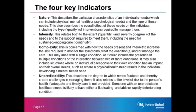The four key indicators will be considered as well as scoring the needs as per the previous slide. In addition, the assessor will be looking at the nature, intensity, complexity and unpredictability of the needs. Nature describes the particular characteristics of an individual's need, which can include physical needs, mental health needs or psychological needs and the type of those needs. This also describes the overall effect of those needs on the individual, including the type and quality of interventions required to manage them. Intensity relates both to the extent — how often that need needs to be met — and the severity, how hard it is to meet that need, and the support required to meet the need.